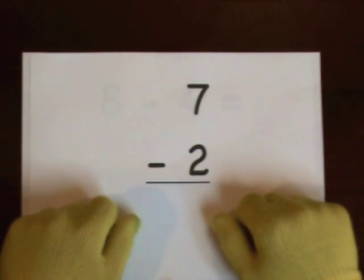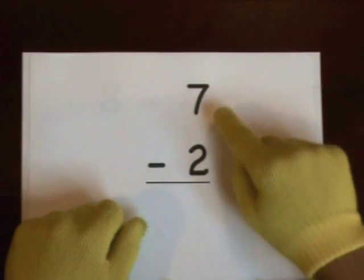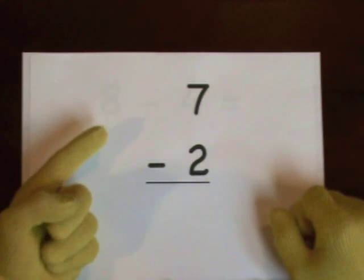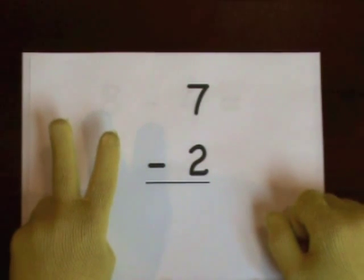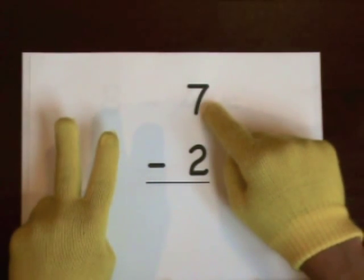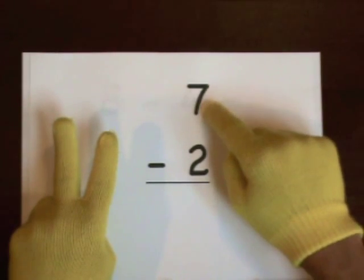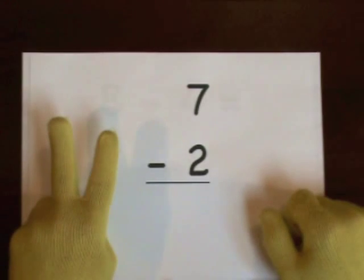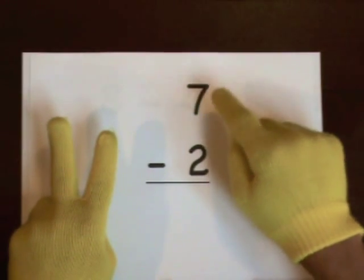Next step. 7 minus 2. Start at 7, do 2 on our fingers. 1, 2. I'll start at 10, count down to 7. You count the rest of the way. 10, 9, 8, 7. Again, 10, 9, 8, 7.